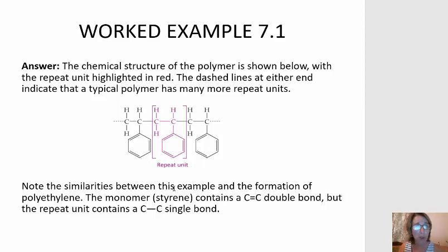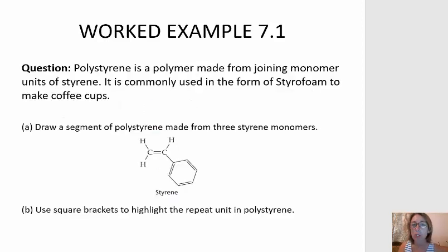The repeat unit is based on the monomer, and the only difference is that it doesn't have a double bond. In the polymer, there is no double bond, whereas the monomer does have a double bond.